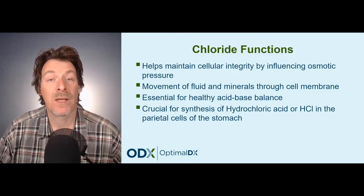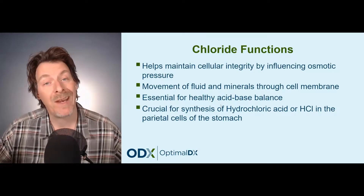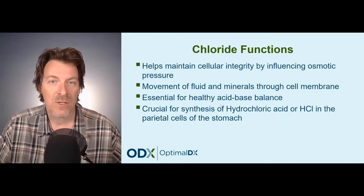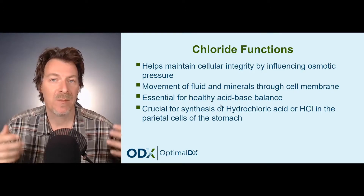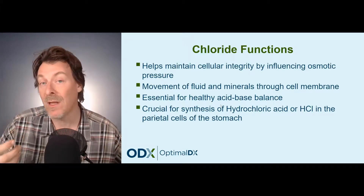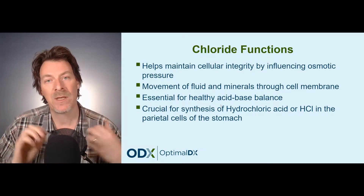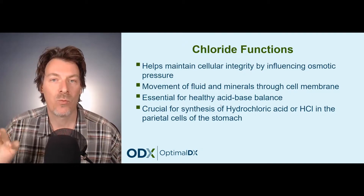Let's talk about some of the clinical implications. What are the clinical implications of an increased chloride? It's associated, along with sodium and potassium, with an increased red blood cell count, hematocrit, and hemoglobin in dehydration. But something else we need to pay attention to is its role in metabolic acidosis. The main biomarker we look at for metabolic acidosis and alkalosis is CO2, which we'll cover in a future presentation. But increased chloride levels are associated with metabolic acidosis.